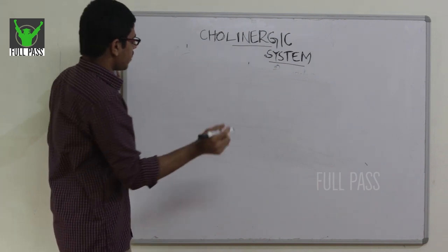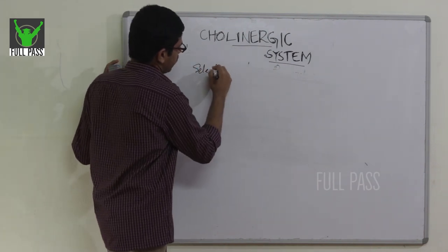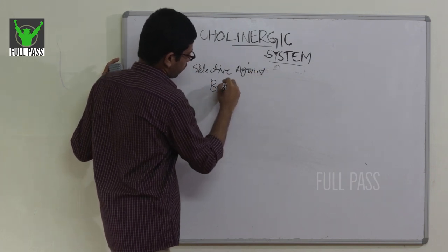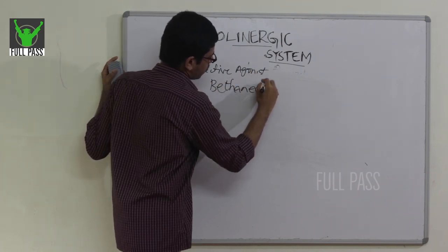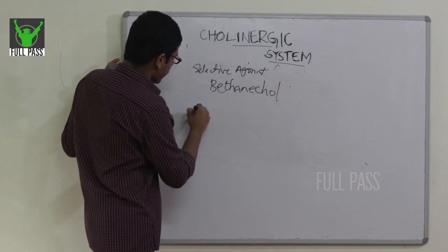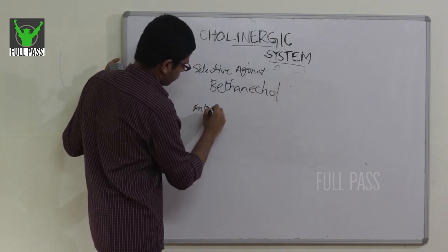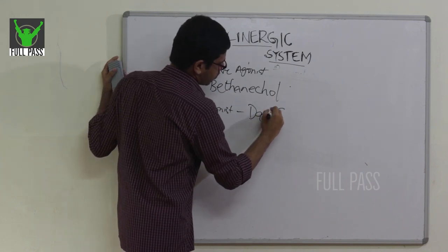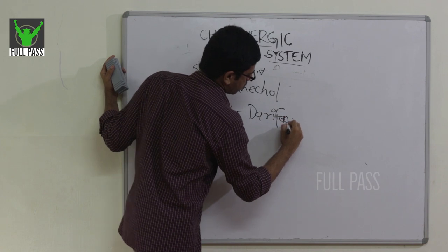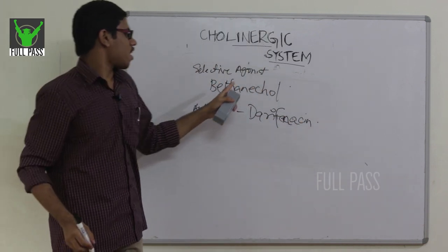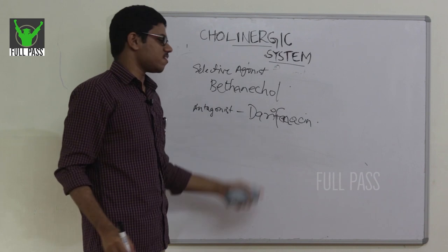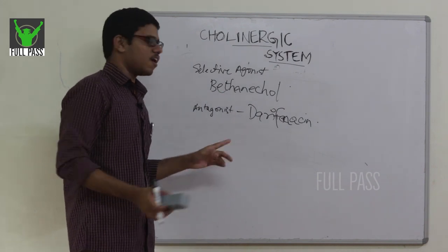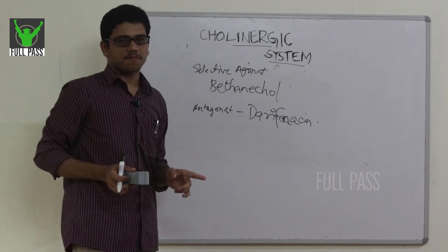The selective agonist for M3 receptor is bethanechol and the selective antagonist is darifenacin. This completes the discussion of muscarinic receptors.